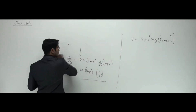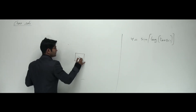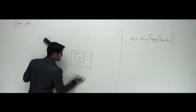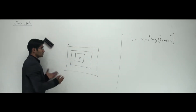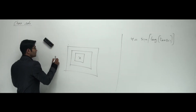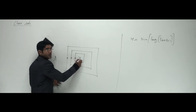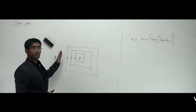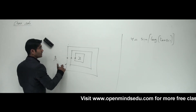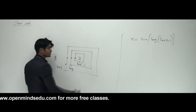Let's use a story to understand this. Imagine a princess (representing x) is inside a jail with multiple walls. You are the prince trying to save her. You must break each wall one by one to reach the princess. The outermost wall is sine, the next wall is log, and the inner wall is tan — that's the chain rule with multiple chains.